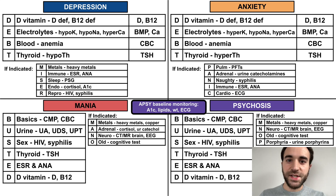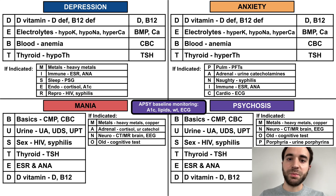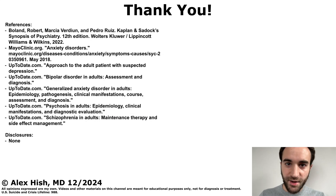That's the end of this talk. I hope this is a helpful schema for screening for medical causes of depression, anxiety, mania, and psychosis. Thank you.